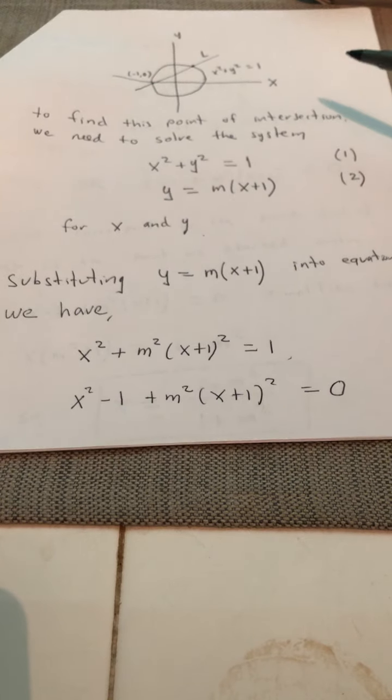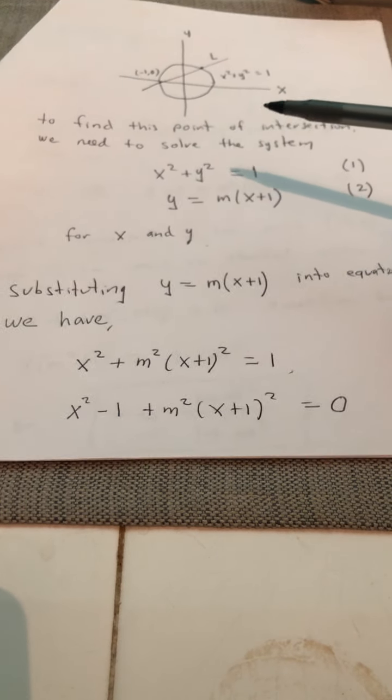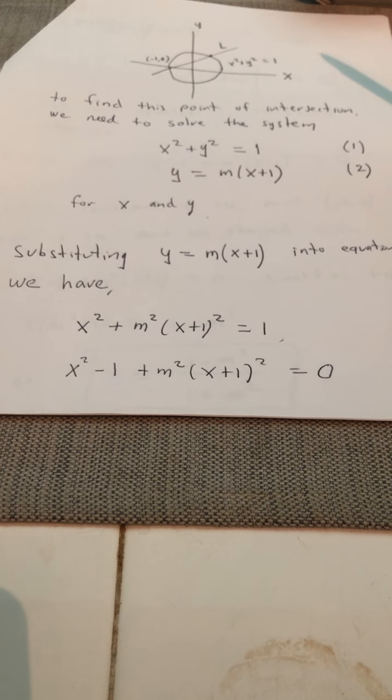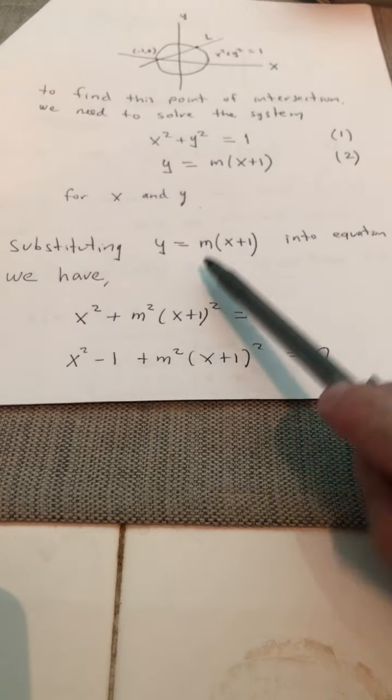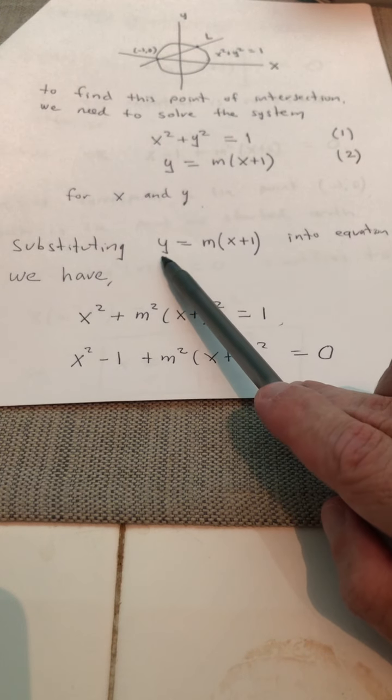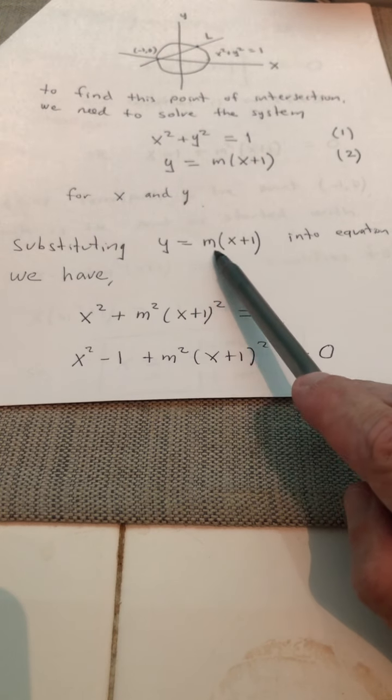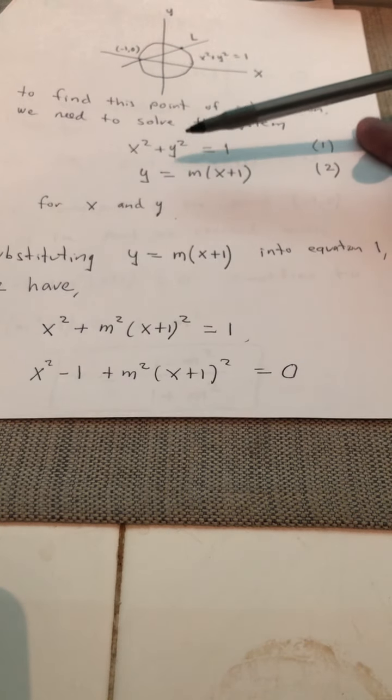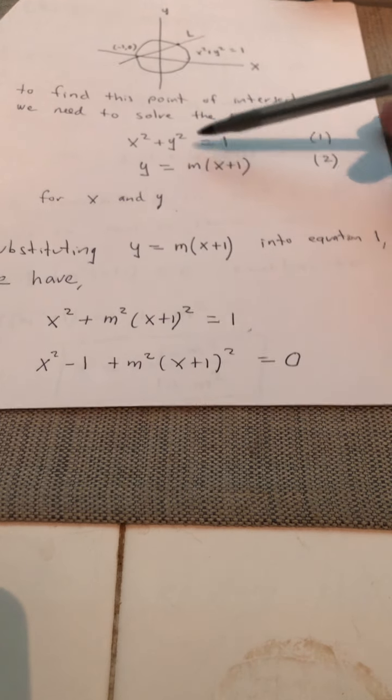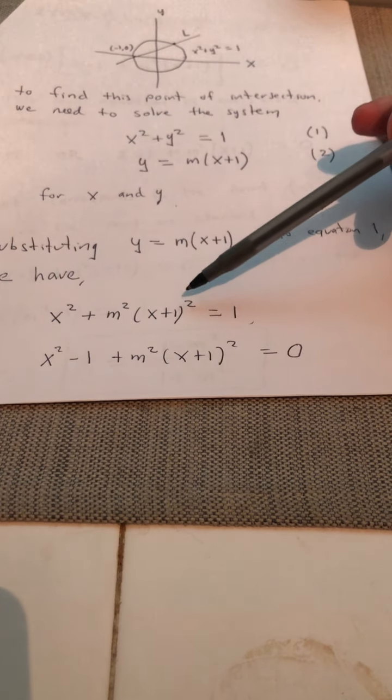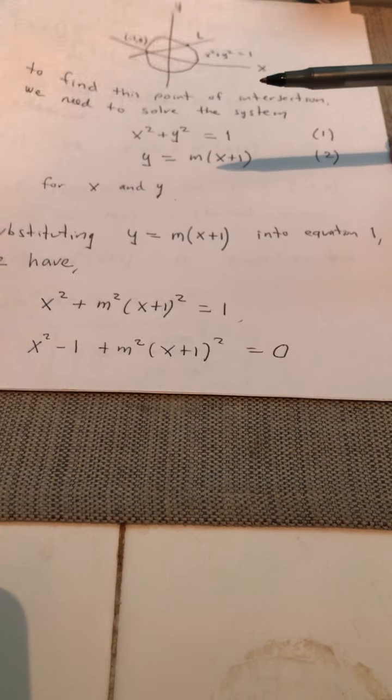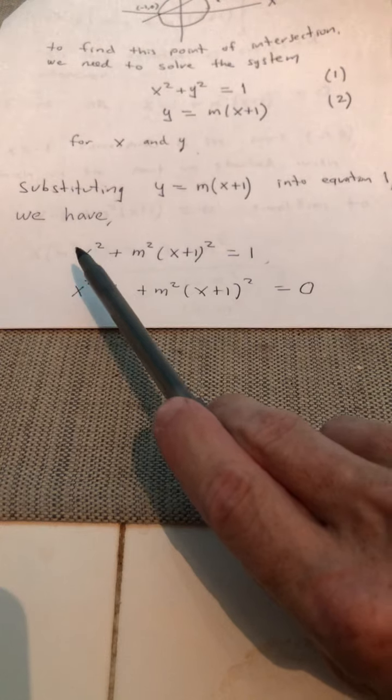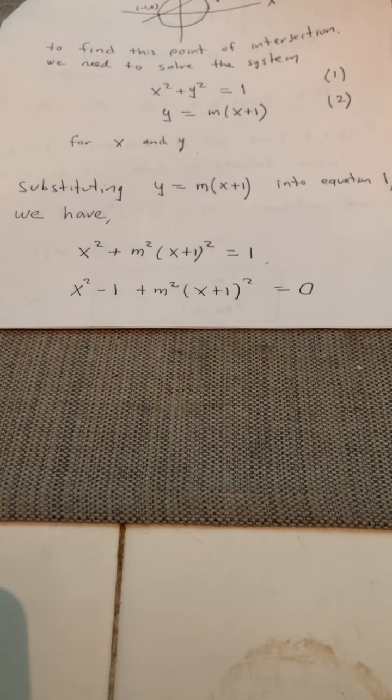So we're going to solve this nonlinear system for x and y. And nonlinear systems, quite often, but not always, we'll solve the system by using substitution. So what we'll do is we'll substitute y equals m times x plus one into equation one. So in place of y squared, I'm going to have m squared times x plus one squared.